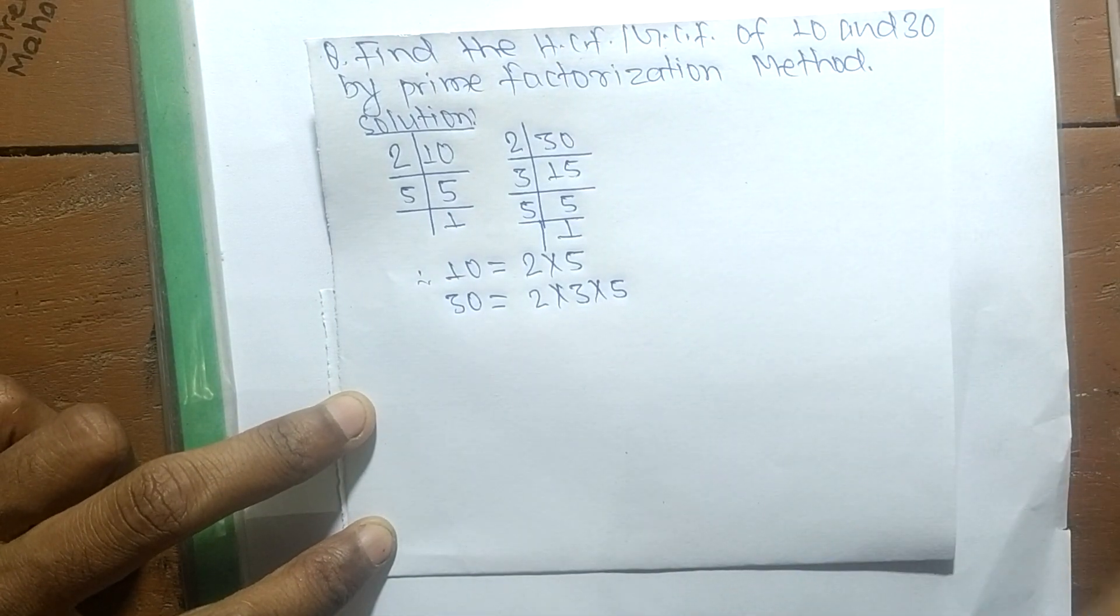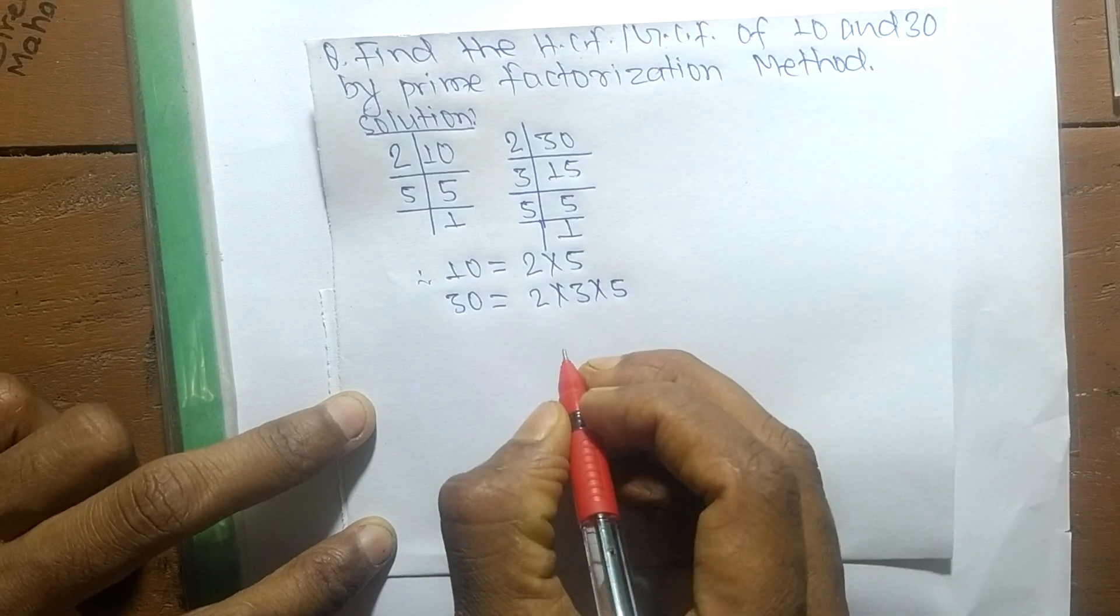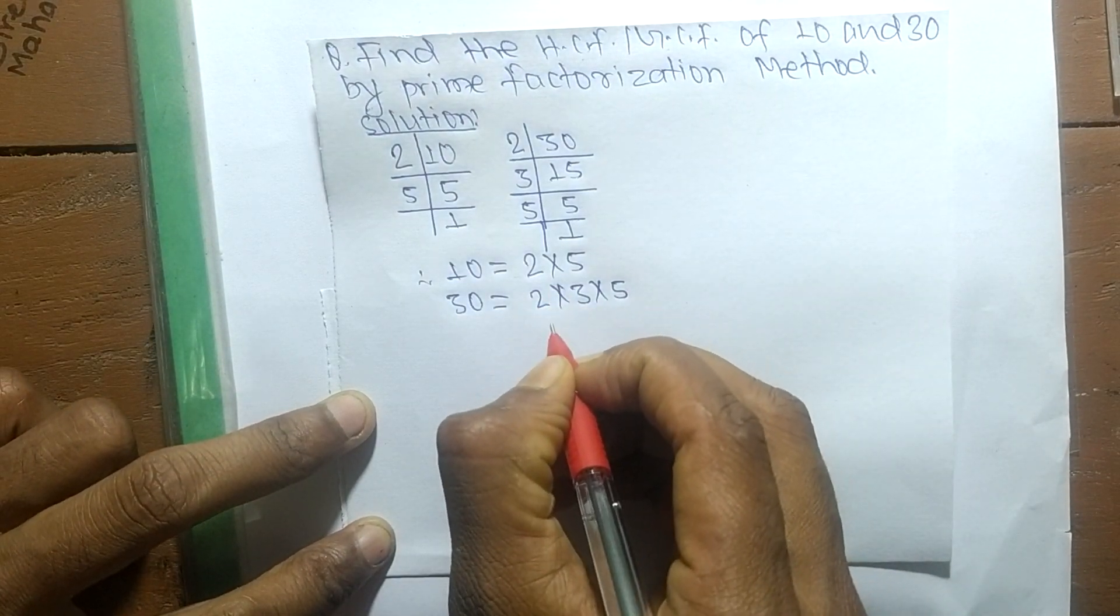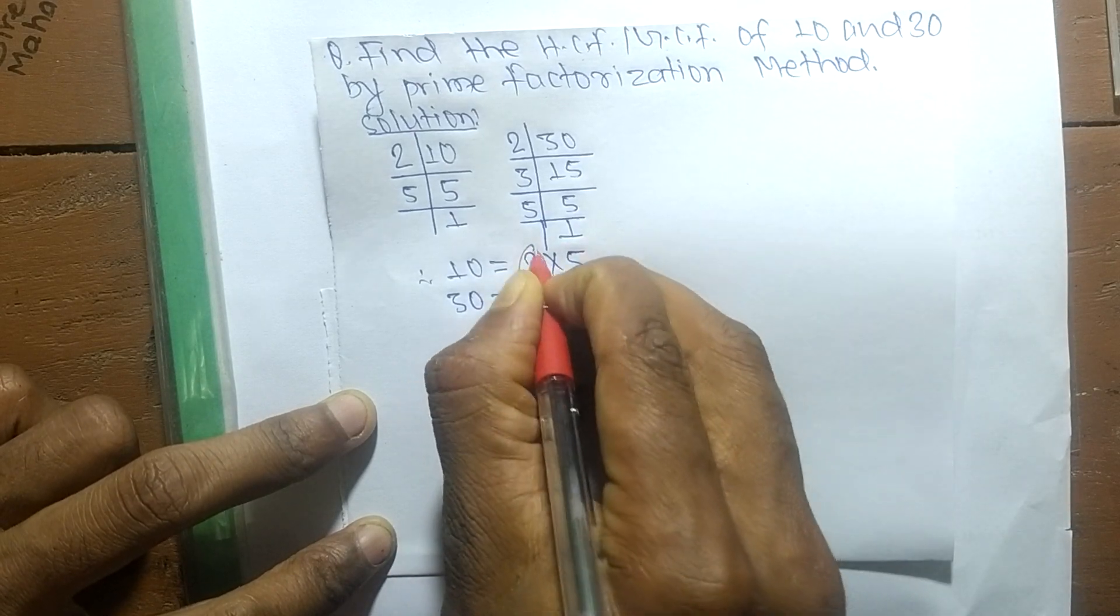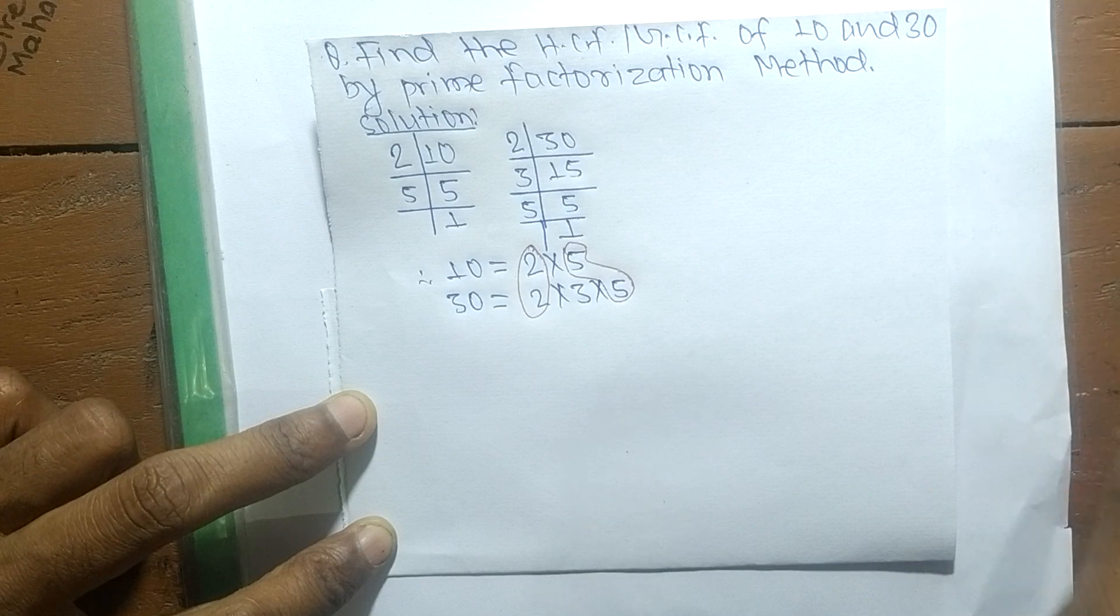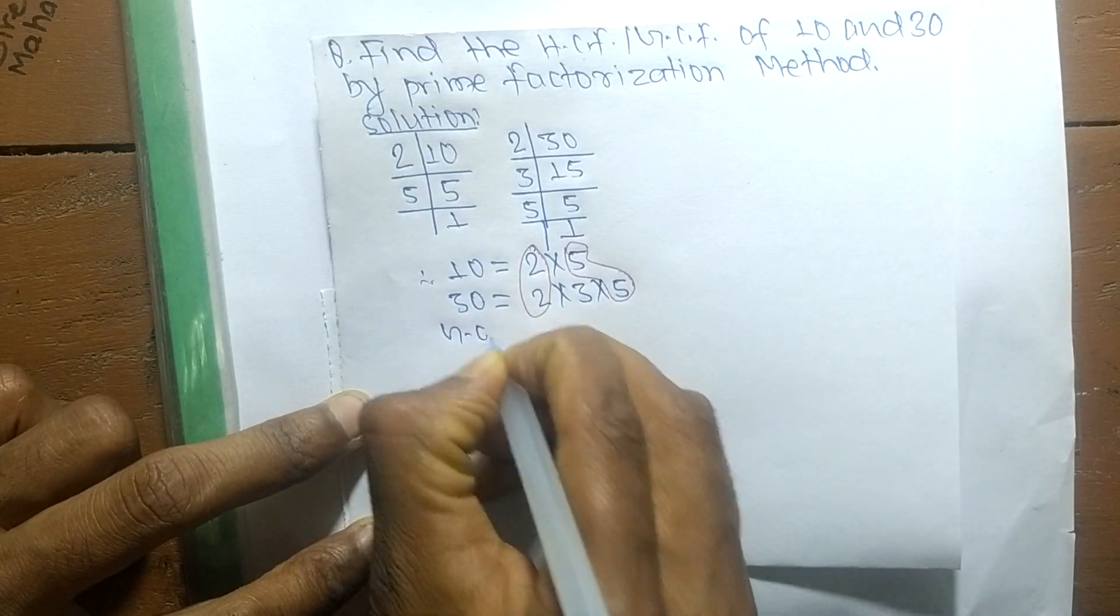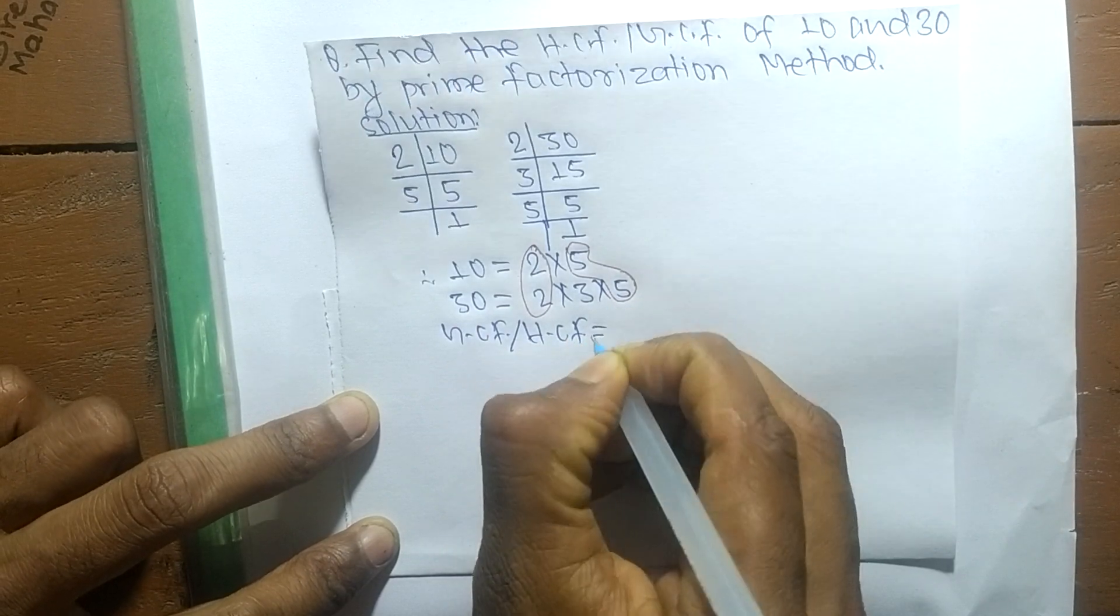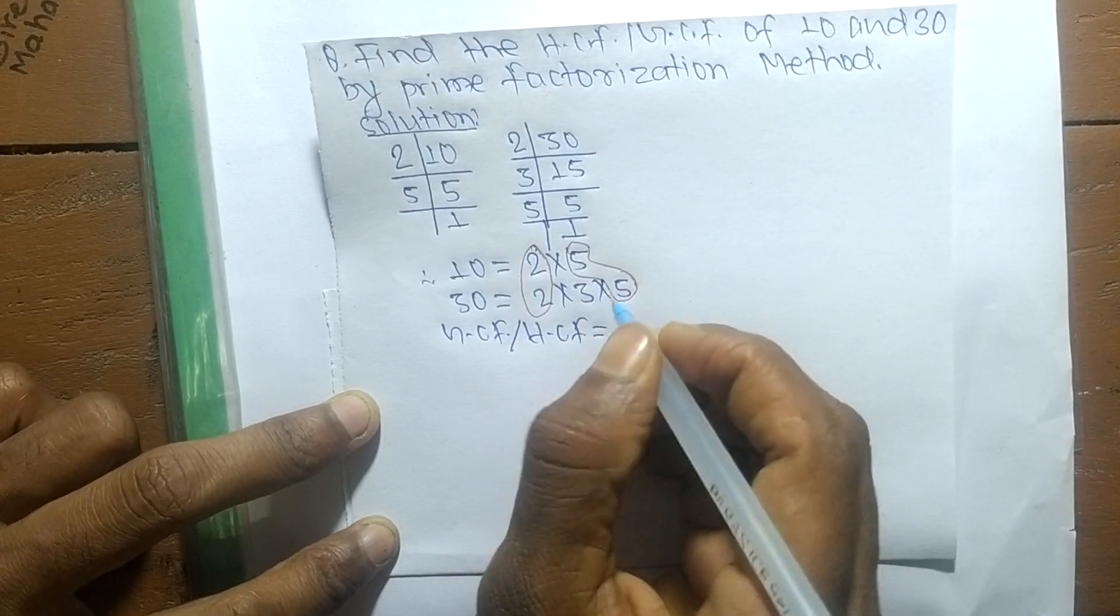As you know, GCF or HCF is the product of common factors. Now we have to find out the common factors in both the prime factors. The common factors here are 2 and 5.